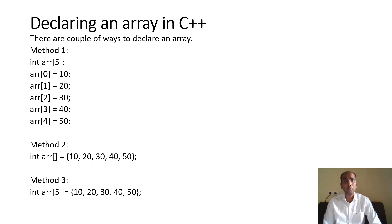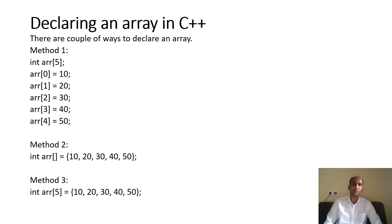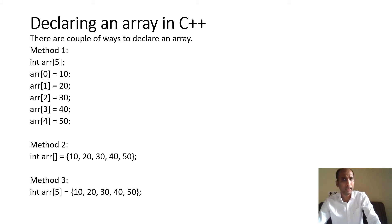To declare an array, the syntax is: data type, name of array, square bracket, size, closing square bracket. For example, I have declared int arr[5]. The index positions vary from 0 to 4. Then I initialize: arr[0] = 10, arr[1] = 20, arr[2] = 30, arr[3] = 40, arr[4] = 50. This is one way to initialize values inside an array.